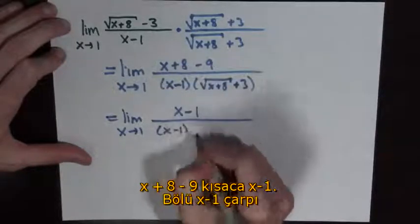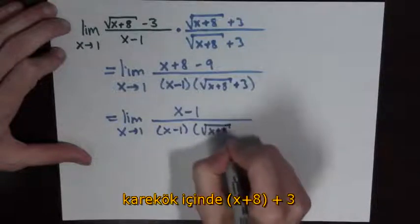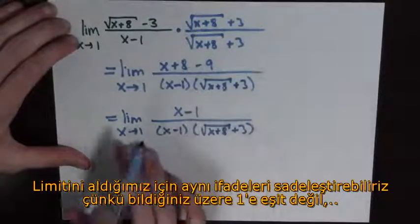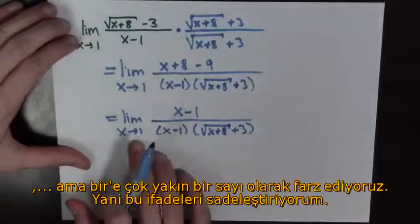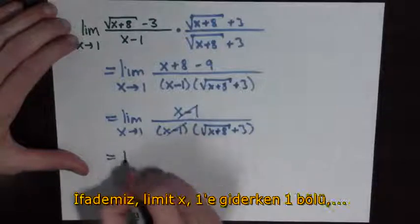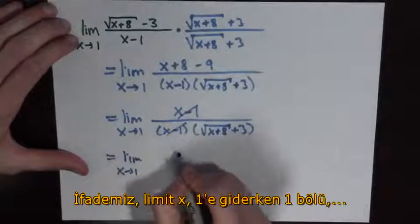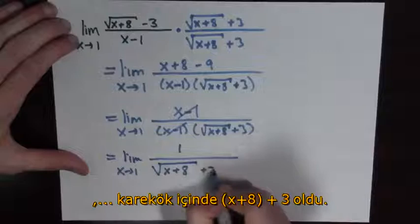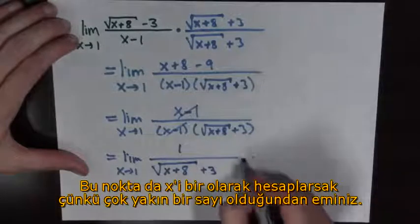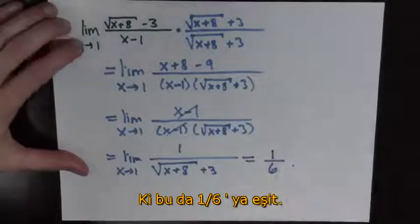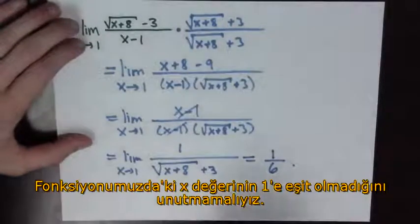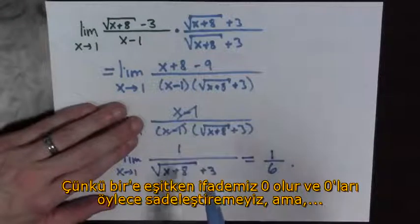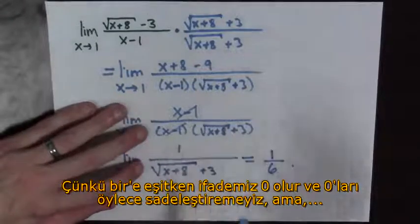Aha! So now we have x minus 1 over x minus 1 times the square root of x plus 8 plus 3. Since we're taking the limit we may cancel these terms, because we're assuming that x is not equal to 1. So we cancel these terms and get the limit as x goes to 1 of 1 over the square root of x plus 8 plus 3. At this point we can just evaluate at x equals 1, so this is equal to 1 sixth. We should point out that this function is not equal to the original one, because when you evaluate x at 1 the original is undefined and this one equals 1 sixth.